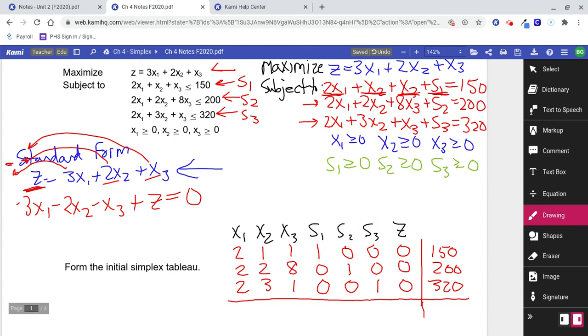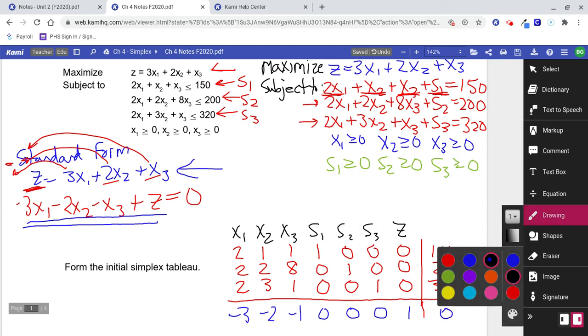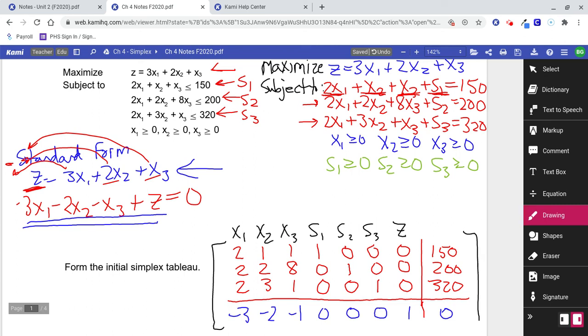Remember, it had to be in standard form. So, actually, I don't want that. I want this. I want the standard form of that objective function. So, it's going to be negative 3x1, negative 2x2, negative 1x3. Notice, it doesn't have any slack variables in it. It didn't need any slack variables. It was already an equation. It does have a z, though. And it equaled 0. That's your initial simplex tableau.